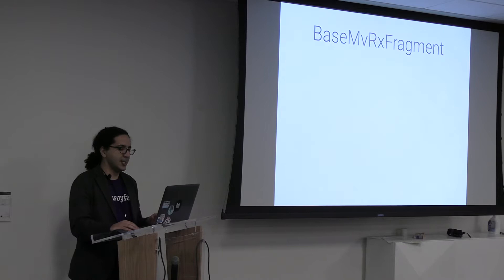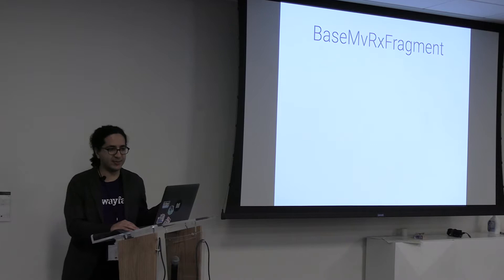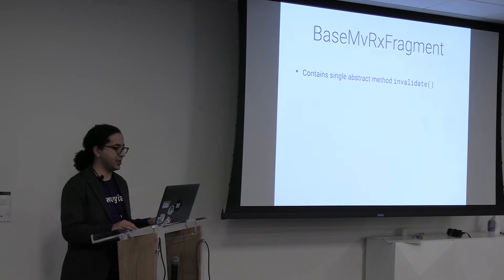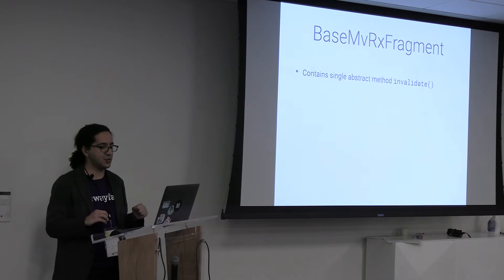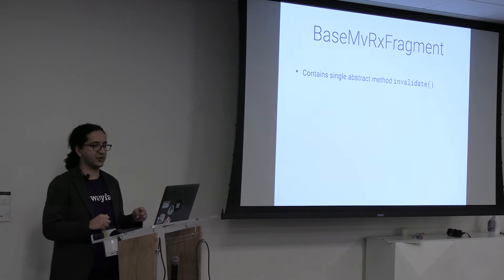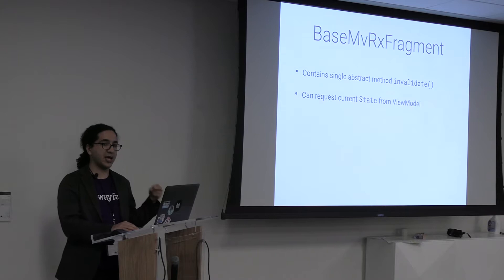When you're building an app for fragments, you're going to want to extend BaseMavericksFragment. When you do, you'll have to implement a method called invalidate. In invalidate, you're going to do all the things that create a screen — so you have that composer and those songs, and this is where you do the magic that turns that into a screen. Your fragment will request a state from the view model to do that.